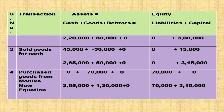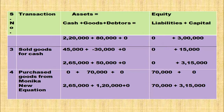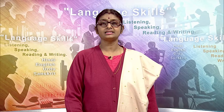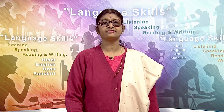Next transaction: purchase goods from Monika for rupees 70,000 on credit. Goods are coming inside the business, so in the goods column add 70,000. It is purchased on credit, so creditors increase and liability increases — in the liabilities column add 70,000. New accounting equation: cash 2,65,000 plus goods 1,20,000 equals liability 70,000 plus capital 3,15,000. That is 3,85,000 on both sides — accounting equation is satisfied.